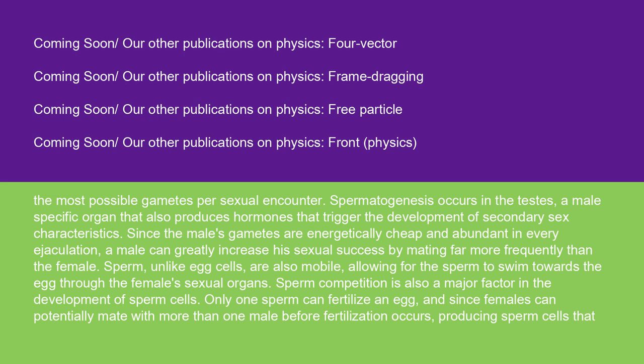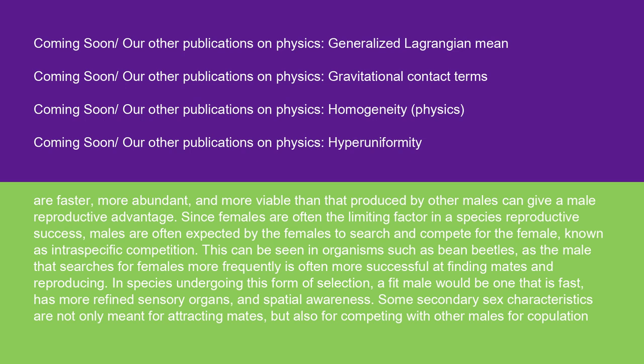Sperm competition is also a major factor in the development of sperm cells. Only one sperm can fertilize an egg, and since females can potentially mate with more than one male before fertilization occurs, producing sperm cells that are faster, more abundant, and more viable than those produced by other males can give a male reproductive advantage. Since females are often the limiting factor in a species' reproductive success, males are often expected to search and compete for the female, known as intraspecific competition. This can be seen in organisms such as beetles, where the male that searches for females more frequently is often more successful at finding mates and reproducing. In species undergoing this form of selection, a fit male would be one that is fast, has more refined sensory organs and spatial awareness.